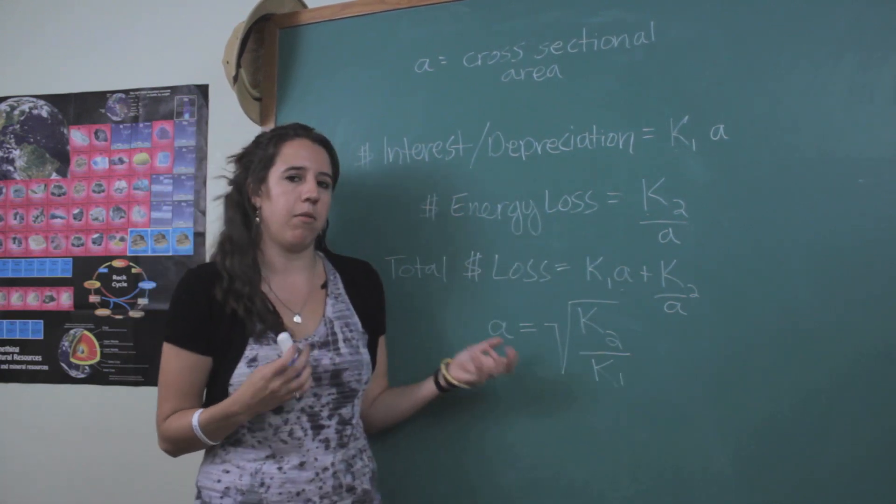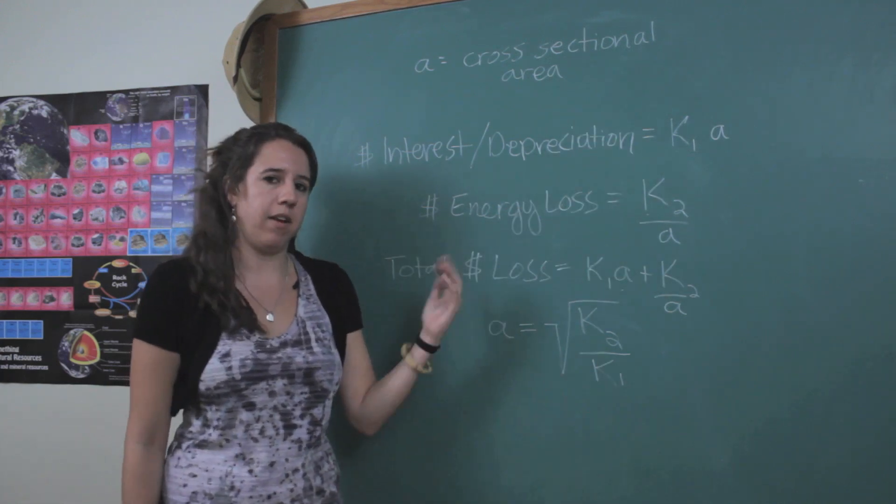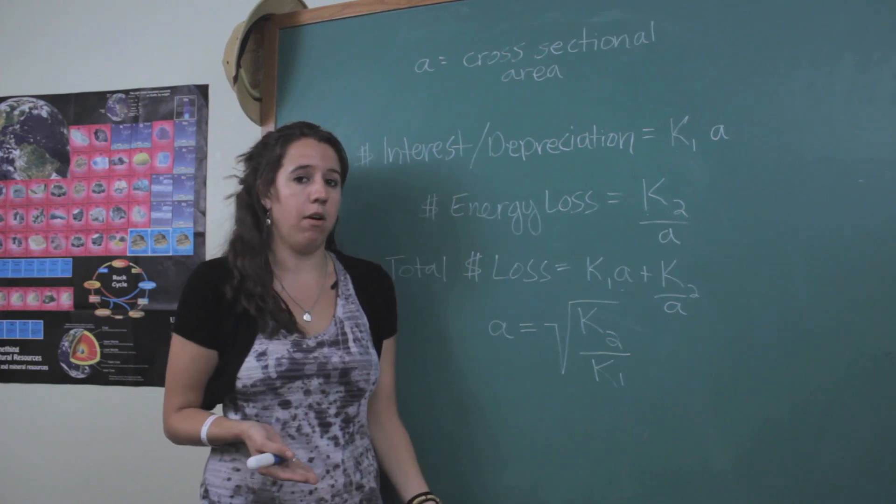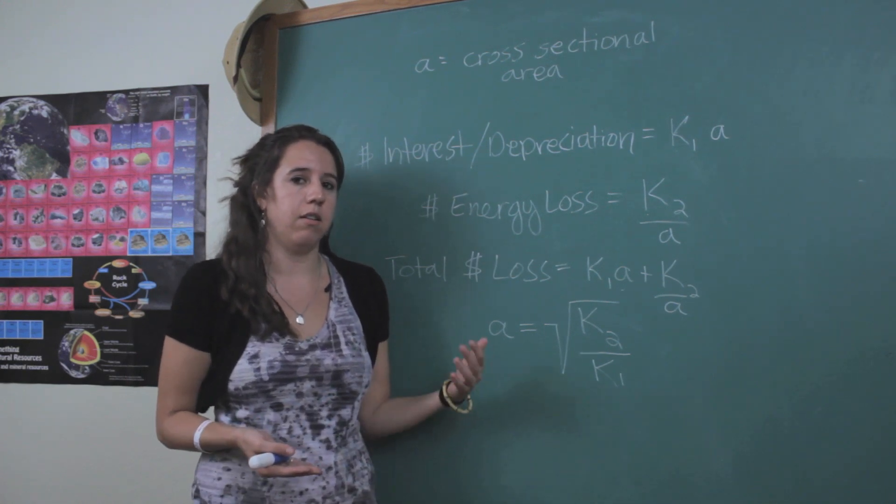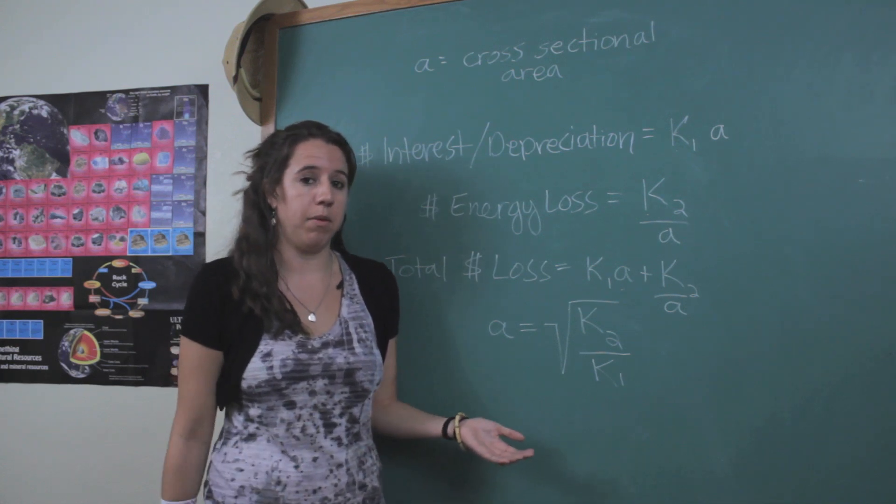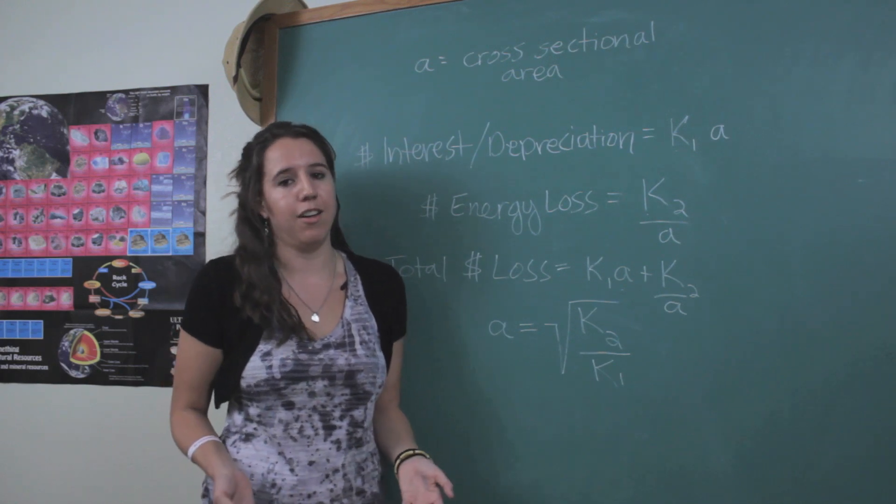So in principle, it seems like it would be really simple to just look up these quantities and divide them and take the square root and then figure out A. But in reality, when you're actually trying to transmit power over these long distances with conductors, there are a lot of other factors that come into play other than these two constants that will ultimately affect the efficiency of your conductor.